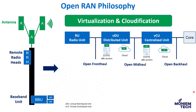With Open RAN, the operator has a choice to select the optimal solution for each network element, including operating system, hardware, and software, enabling a dynamic multi-vendor environment. The first benefit of virtualization is COTS servers — the virtual DU and virtual CU run on common off-the-shelf servers, reducing dedicated hardware costs. These x86-based standardized components are already available from various suppliers.